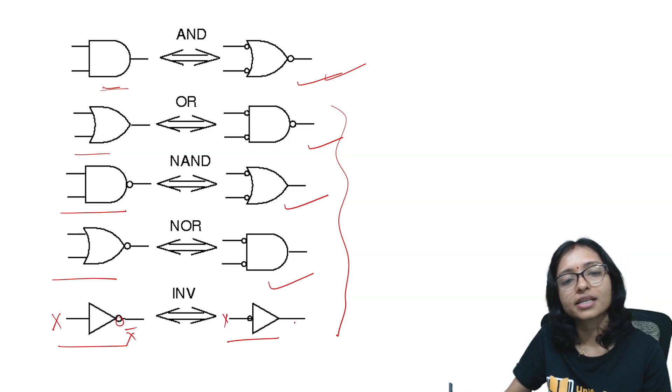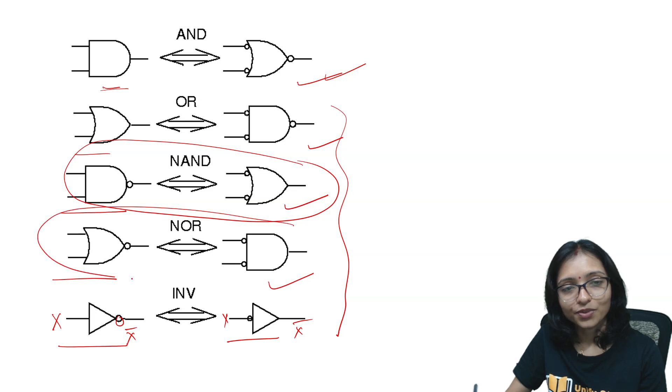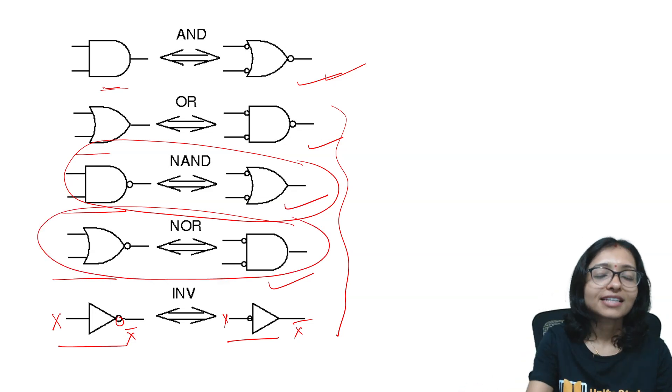So here it is actually same output and input whatever you are giving because here it is X means it will be X bar. Here it is X means it will be X bar. This is same. But here they are changing. This one and this one. So this is the ultimate understanding.